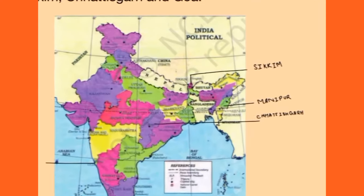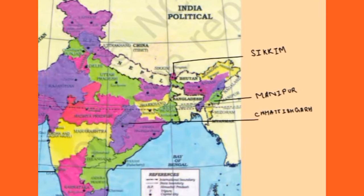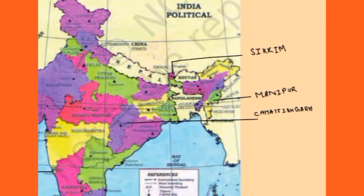First, let's talk about Sikkim. Sikkim's location — here you can see Nepal and Bhutan. This area is famous for Kanchanjunga. It is marked here in green colour.